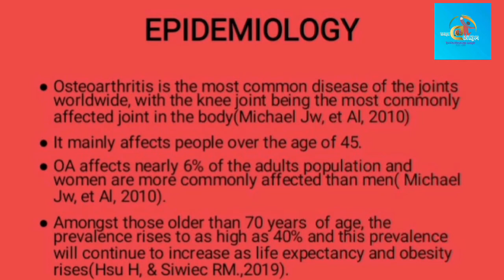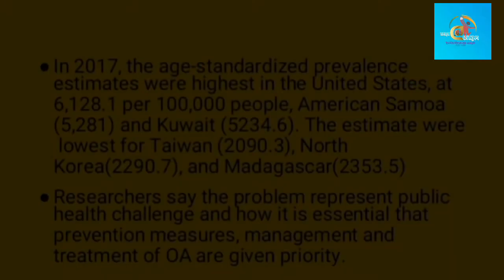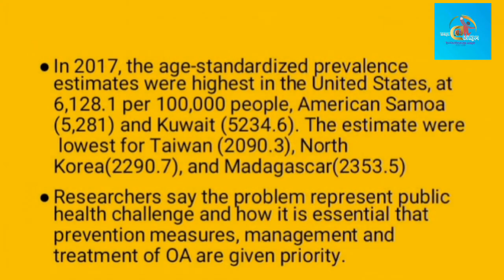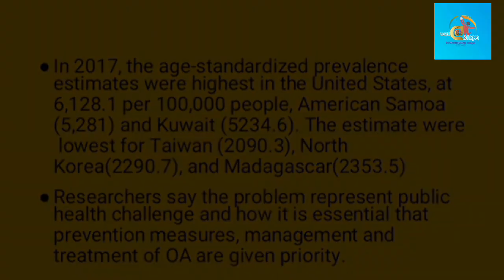This prevalence will continue to increase as life expectancy and obesity rise. Just in 2017 alone, the age-standardized prevalence estimates were highest in the United States at 6,128.1 per 100,000 people, followed by American Samoa at 5,281 and Kuwait at 5,234.6. The estimates were lowest for Taiwan at 2,090.3, North Korea at 2,290.7, and Madagascar at 2,353.5. Researchers say this problem represents a public health challenge and that prevention, management, and treatment of OA must be given priority.